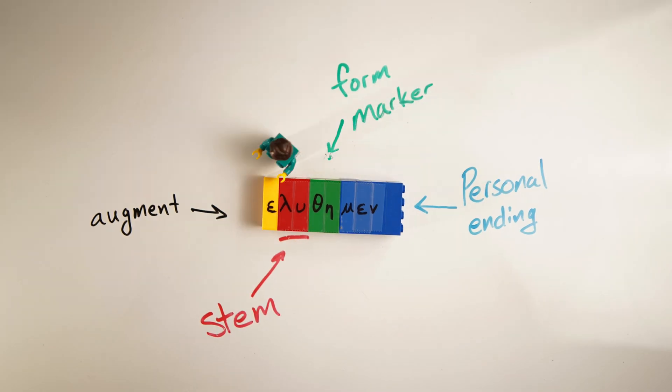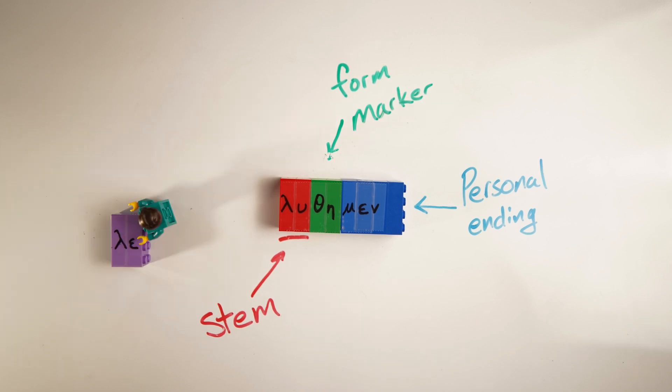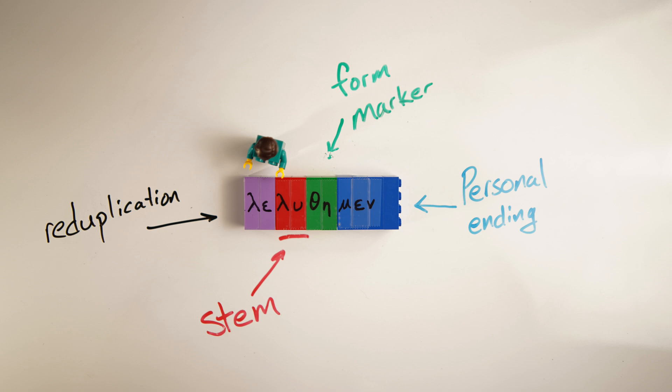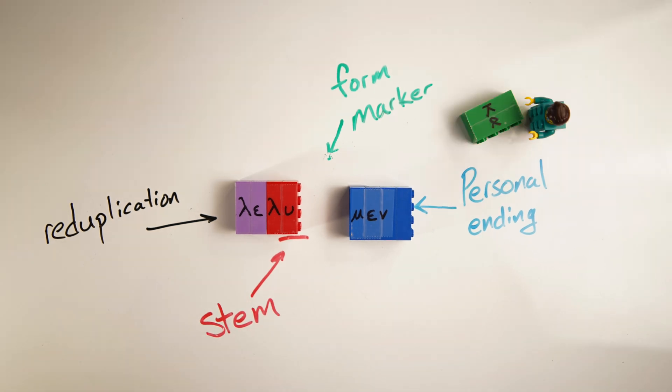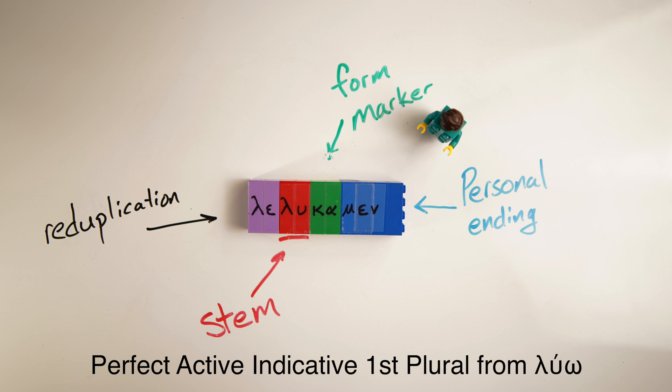Let's do one final example. If we had a perfect active indicative verb, we would remove the augment and take the initial letter of the stem and reduplicate it, putting an epsilon in between — and that's not your augment, it's just to help glide from the reduplicated letter. Then we would need to replace the sigma-alpha or theta-eta form marker with the kappa-alpha of the perfect. So your perfect active indicative first-person plural would be lelukamen. Now, this is not exhaustive — there are a bunch of different combinations we could show — but this hopefully gives you a new way to think about how verbs are constructed, making the memorization process easier.